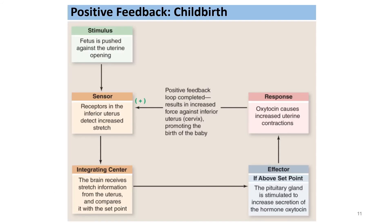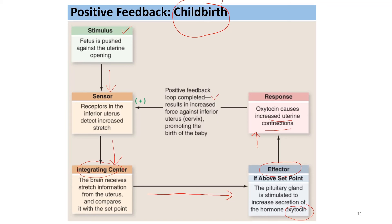This diagram shows the positive feedback mechanism during childbirth. The stimulus is when the fetus is pushed against the uterine opening. The sensor — receptors in the interior of the uterus — detects the increased stretch and sends the signal to the integrating center, where the brain receives the stretch information. The effector then takes action: if it is above the set point, the pituitary gland is stimulated to increase secretion of oxytocin. Increased oxytocin causes increased uterine contraction, completing the positive feedback loop, which results in increased force against the cervix, promoting the birth of the baby.